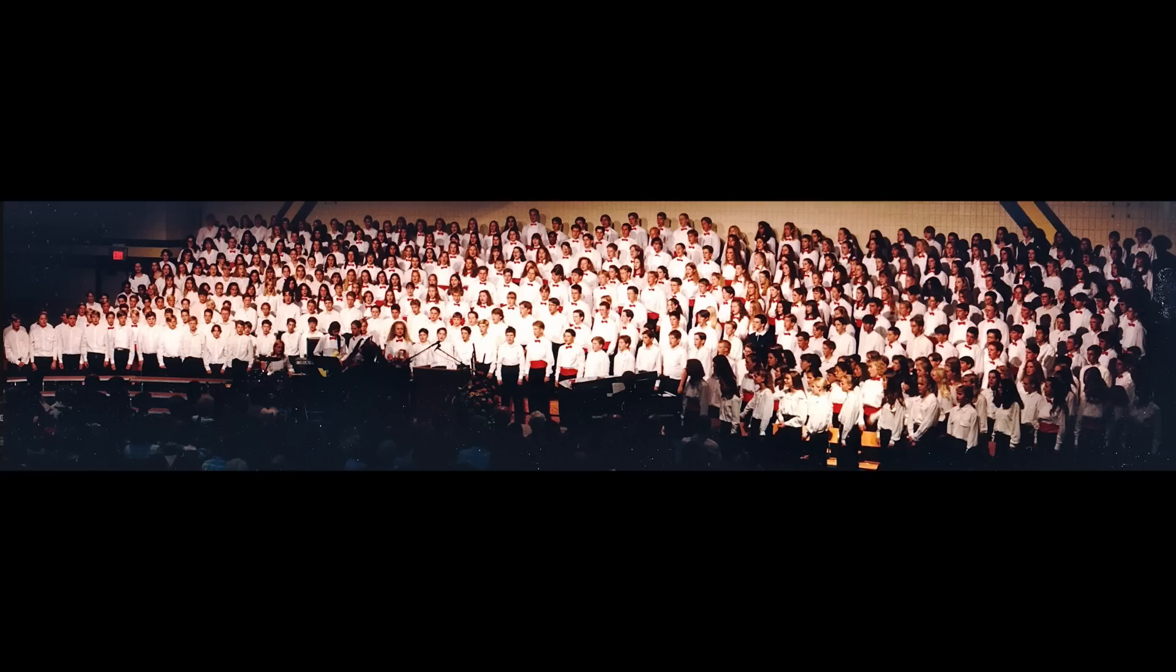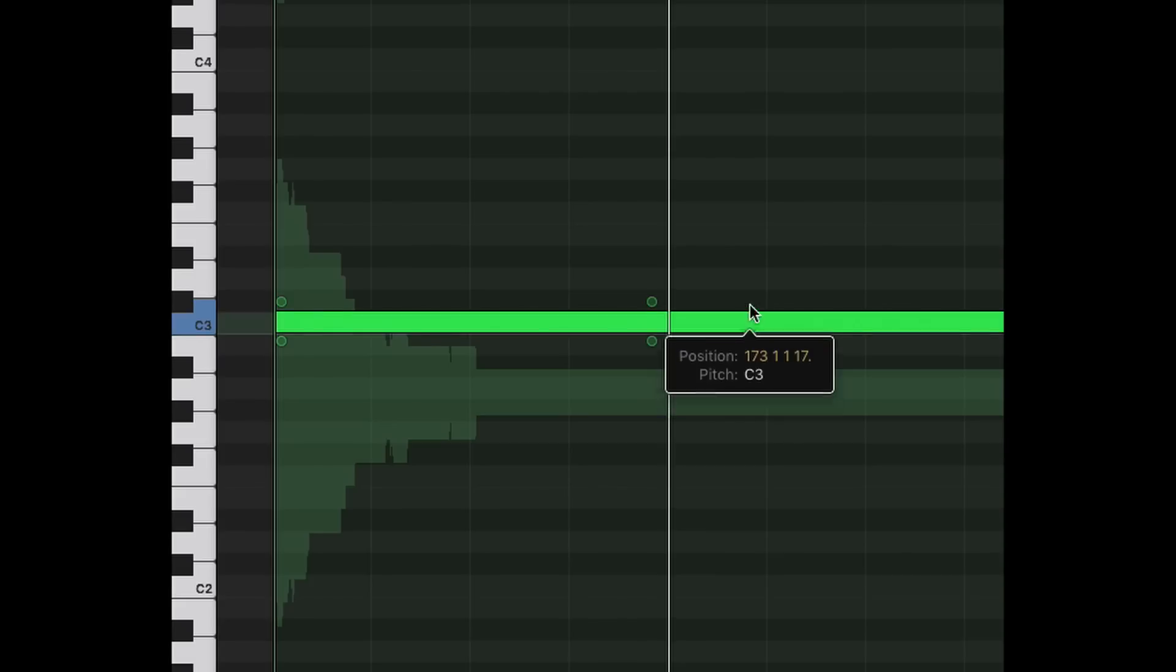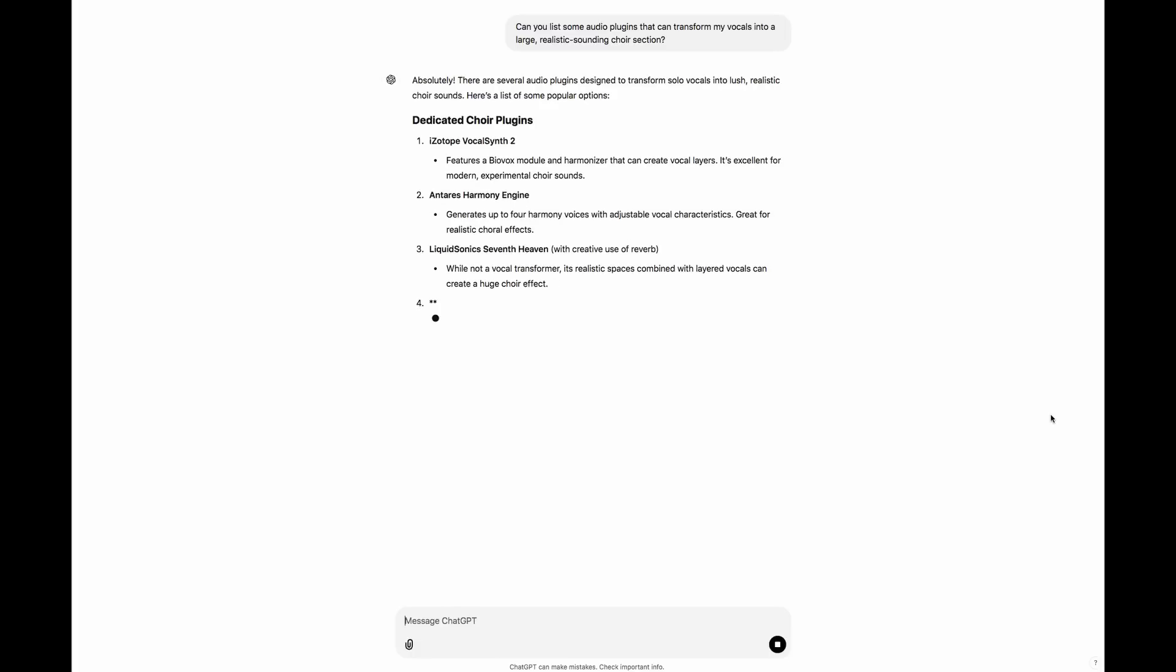So step one was to record every person's part, not every section, every person, and step two was pitch correct every person. Maybe that doesn't sound like a lot of work, but do you know how big choirs are? They probably have a plugin now that will just turn one voice into a whole choir section, with perfect pitch. But when I did this, it was brutal.